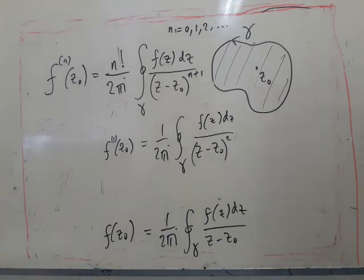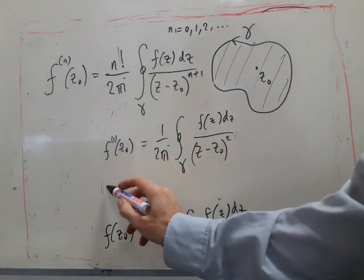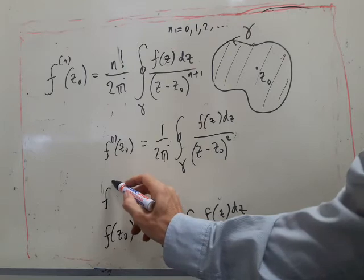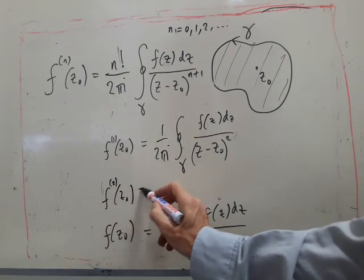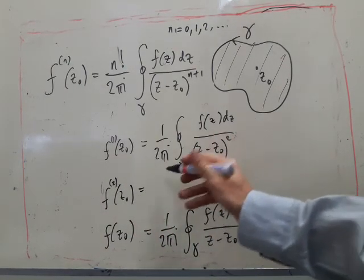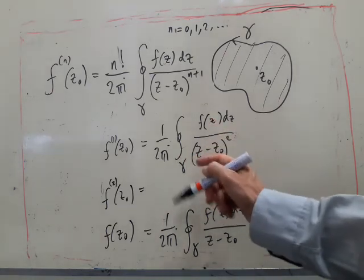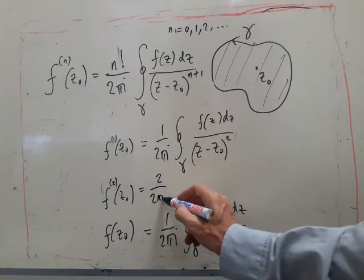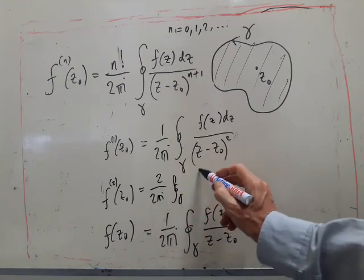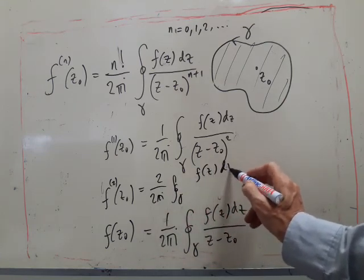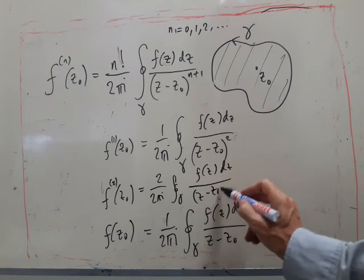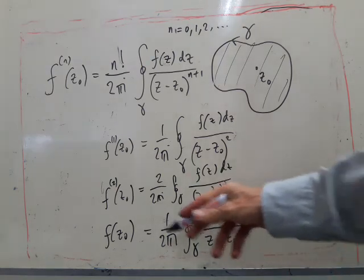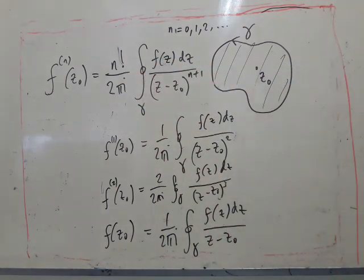If I differentiate again, then I'll end up with f dashed second derivative. This time I'll get a two appearing from this. Again the minus signs cancel and I've got a cube. So you see we've shown the first three cases. You can prove the nth case in a simple way by induction.